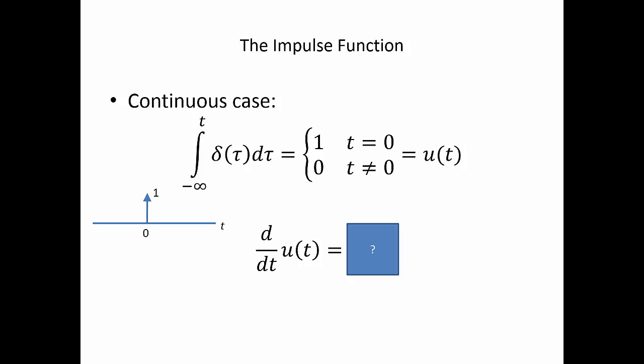Related to integration, the opposite function from integration is differentiation. So if we know that the integral from minus infinity to t of delta of tau d tau is the step function, what do you think is the derivative of our step function? It's our impulse function. You need to know these. We're going to use it quite a bit in this course.